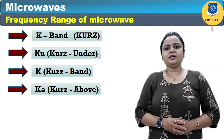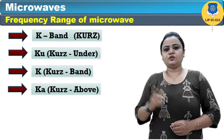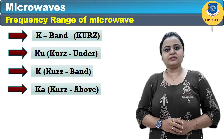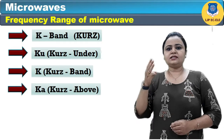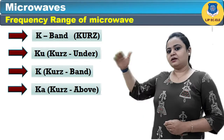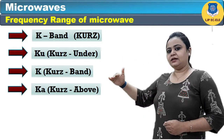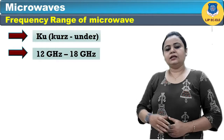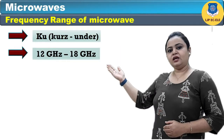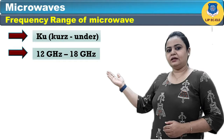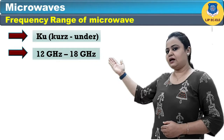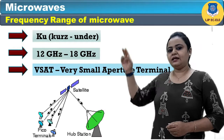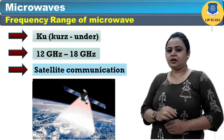The next band is the K band, which was invented and named from the German word KURZ. It has three sub-bands: Kurz-under (Ku), Kurz (K), and Kurz-above (Ka). The Ku band ranges from 12 GHz to 18 GHz and is used in Ku satellite and satellite communication.